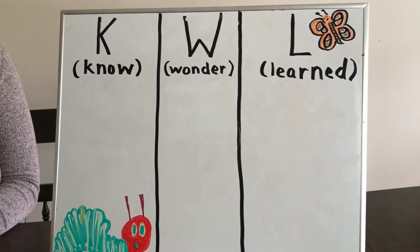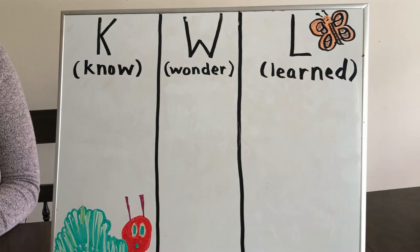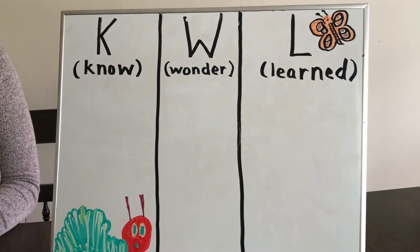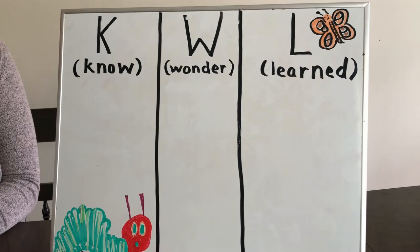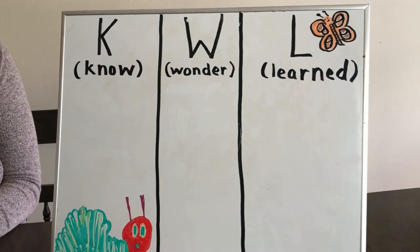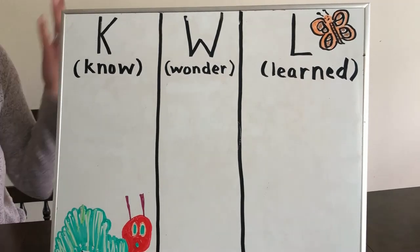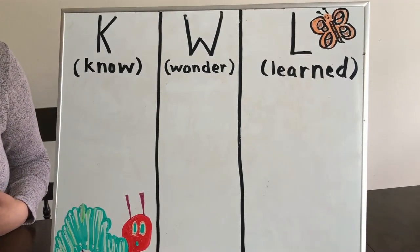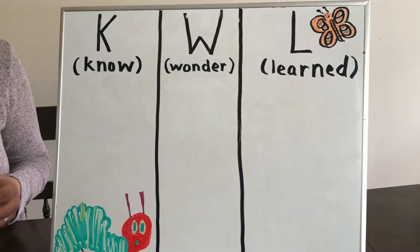After you study about the topic or read some books, see some short videos, you go back and you add new information to the learn column. I'm going to model for you right now. In the K column, I'm going to write down some of the things I know already about butterflies.